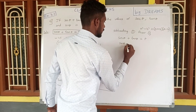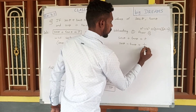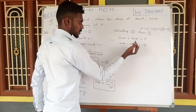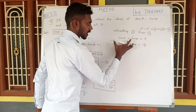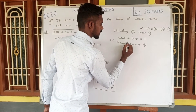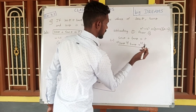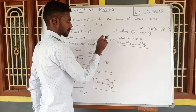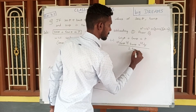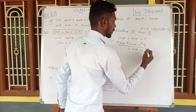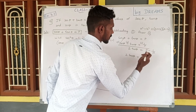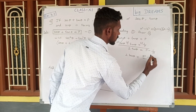Now subtracting condition 2 from condition 1: secant theta minus tan theta equals 1 by P. When we subtract, the secant theta terms cancel, and the tan theta terms remain. So 2 tan theta is equal to P minus 1 by P. Cross multiplying gives P squared minus 1 divided by P.